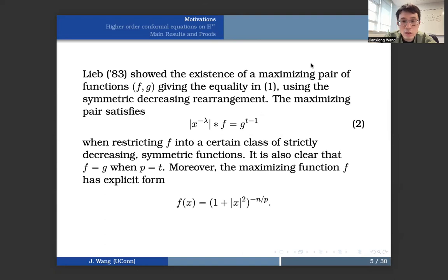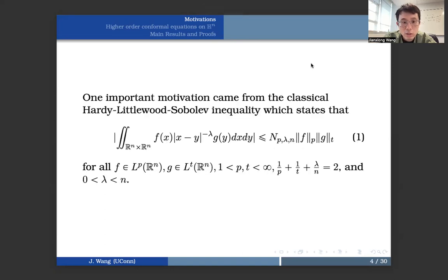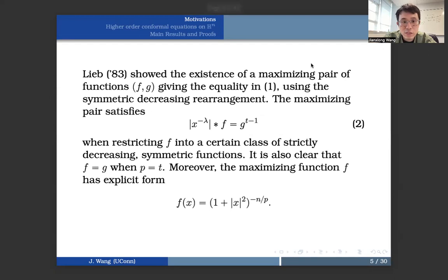equality in the Hardy-Littlewood-Sobolev inequality, using the symmetric decreasing rearrangement. And this maximizing pair satisfies this convolution type equation: x to the power minus lambda convoluted with f is equal to g to the power t minus 1, if we restrict f into a certain class of strictly decreasing symmetric functions. It's also obvious that if p is equal to t, then f must be equal to g.